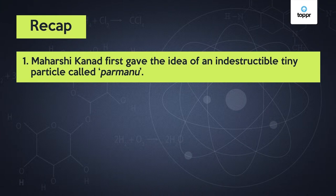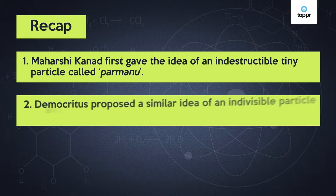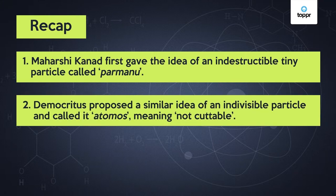Maharishi Kannad first gave the idea of an indestructible tiny particle called Parmanu. Democritus proposed a similar idea of an indivisible particle and called it atomous meaning not cuttable.